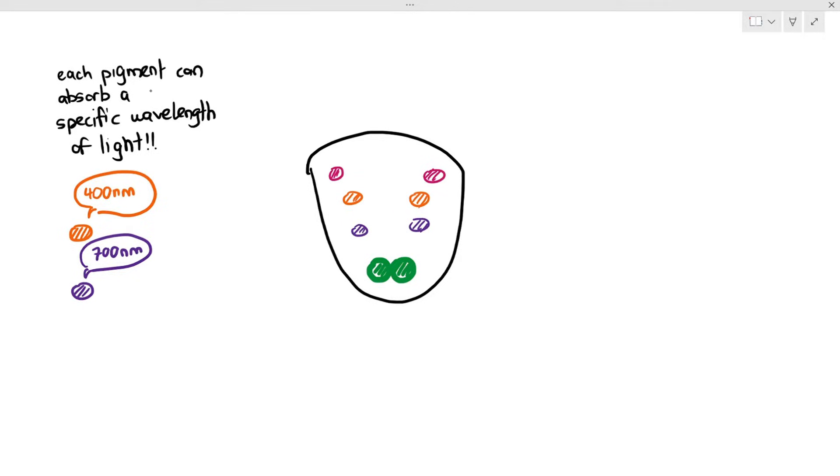The orange pigment can only absorb light at a 400 nanometer wavelength. Again, don't memorize this. And the purple pigment, for example, might only be able to absorb light with 700 nanometer wavelength. Let's see this in action.